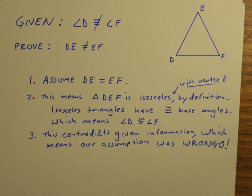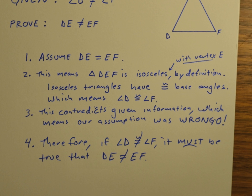We were given that those two angles were not congruent, which means our assumption has to be wrong. Therefore, if angle D is not congruent to angle F, it must be true that segment DE is not equal to EF.